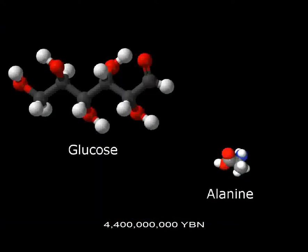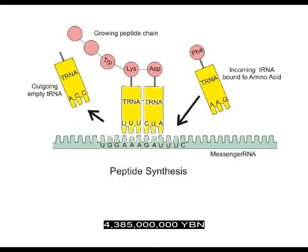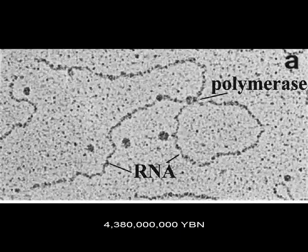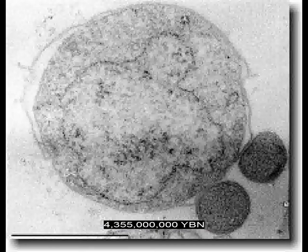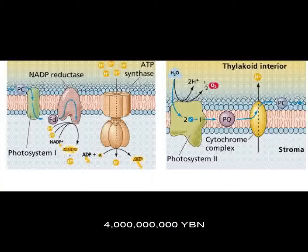Larger molecules form on Earth like amino acids and sugars. Nucleic acids form on Earth. RNA links amino acids into the first proteins. A protein copies nucleic acid molecules. The first cell on Earth. DNA is surrounded by proteins. Cells make the first lipids on Earth. Cell response to light. Photosynthesis. Cells emit free oxygen.